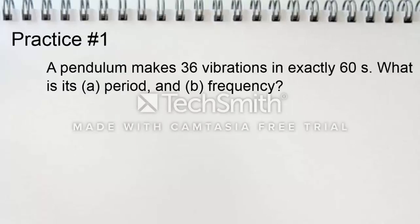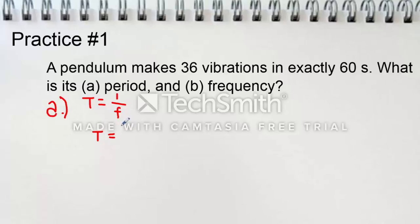Here's another practice problem. A pendulum makes 36 vibrations in exactly 60 seconds. What is its period and frequency? For part A, the period can be found with T equals 1 over frequency. That gives us T equals 60 seconds over 36. Solving that out, we get the period as 1.67 seconds.